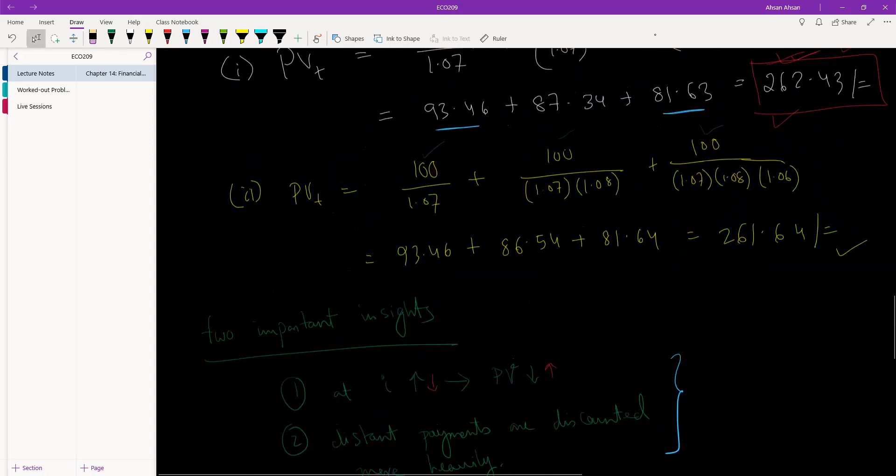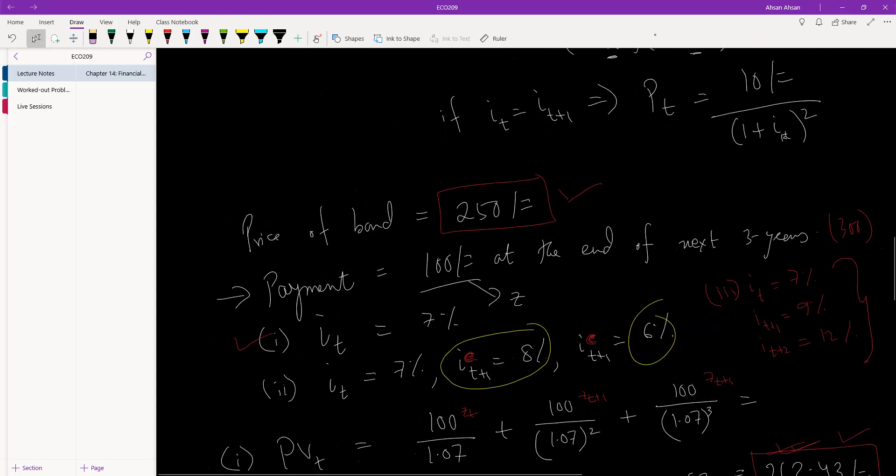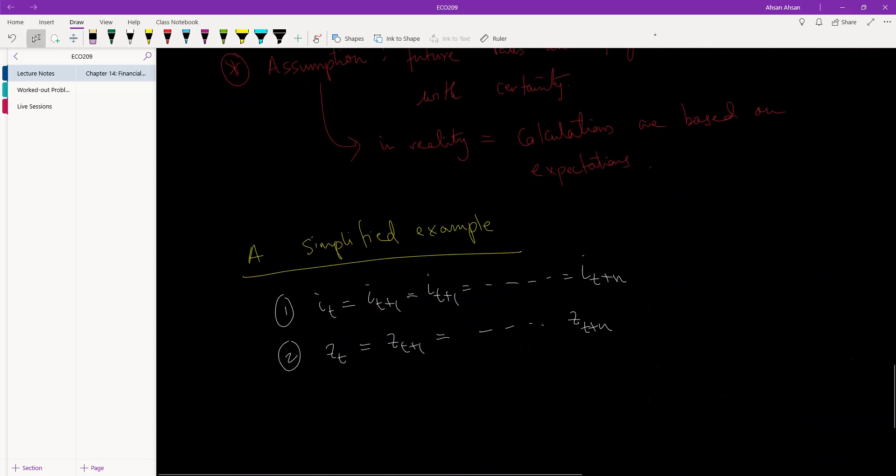Of course, the example that we have looked at, that was indeed the case, but this doesn't really have to be so. Suppose instead of paying us 100 at the end of each year, suppose this bond is going to pay us 100 after year one, 150 after year two, and 125 after year three. That makes sense as well. We can do that calculation. What will change is this value will become 150, this value will become 125, and we can do that calculation. It's just arithmetic manipulation of numbers, not that difficult.